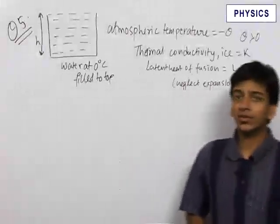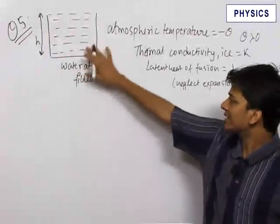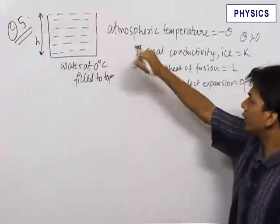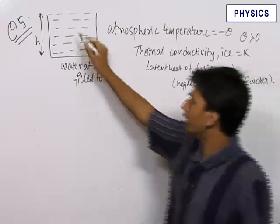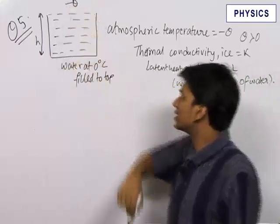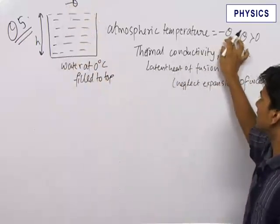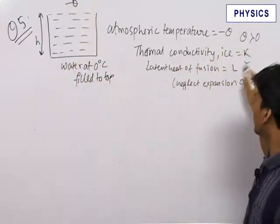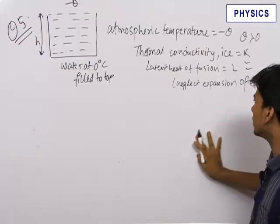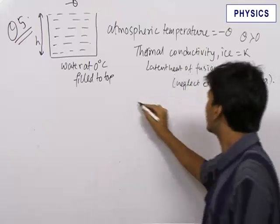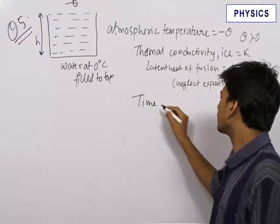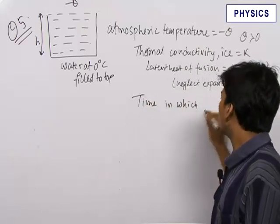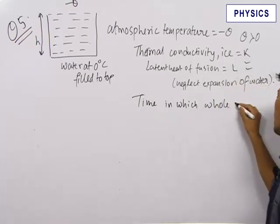We have a very interesting question. There is a tank with water at 0°C filled to the top. The height of the tank is h. The atmospheric temperature is minus theta — since theta is less than 0, the temperature is negative. The thermal conductivity of ice is given, and the latent heat of fusion is given. We neglect the expansion of water, and we need to find the time in which all the water converts to ice.